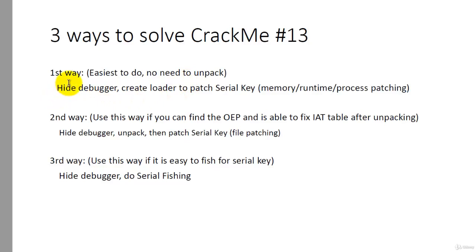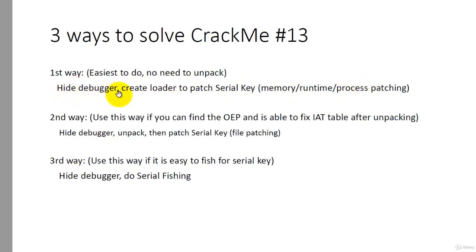In this first method, you will hide the debugger from the program using ScyllaHide or other plugins, and then you will create a loader using OllyDbg's looping feature, and then you will patch the serial key in the process that is running. This method is very useful if you are unable, for whatever reason, to unpack the file.